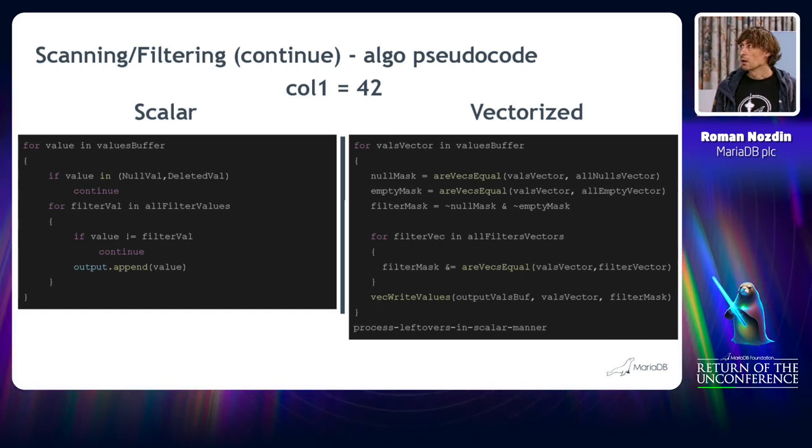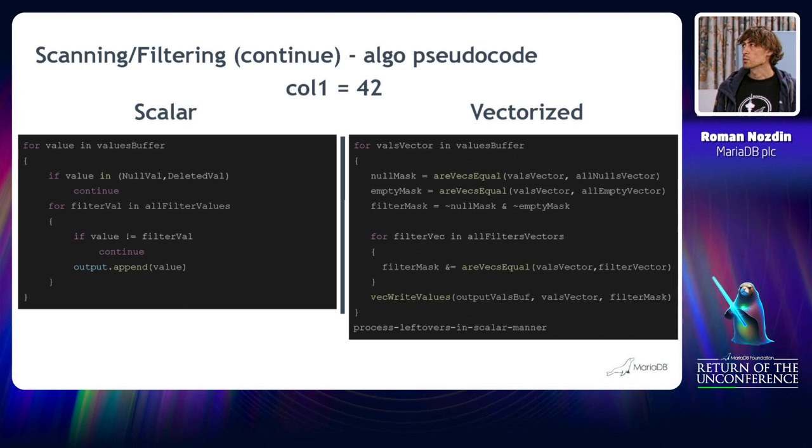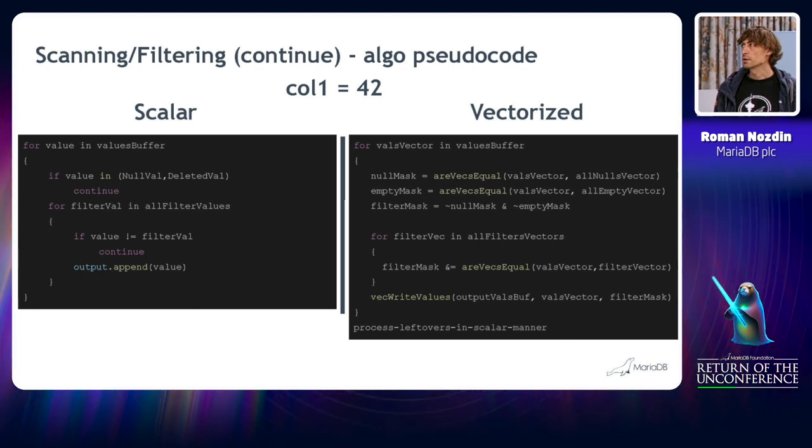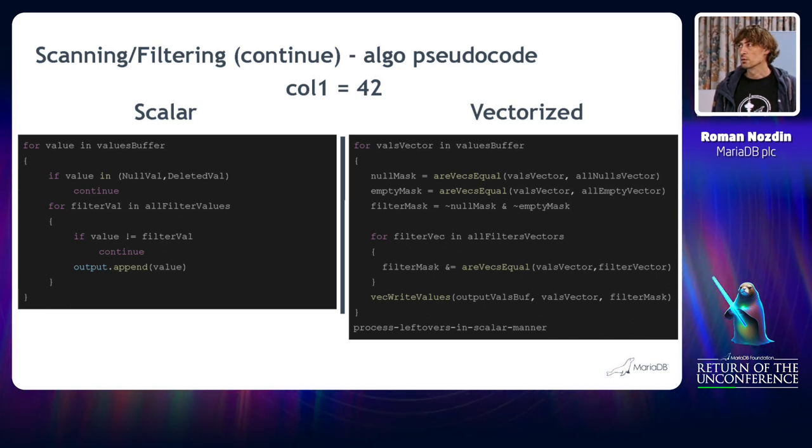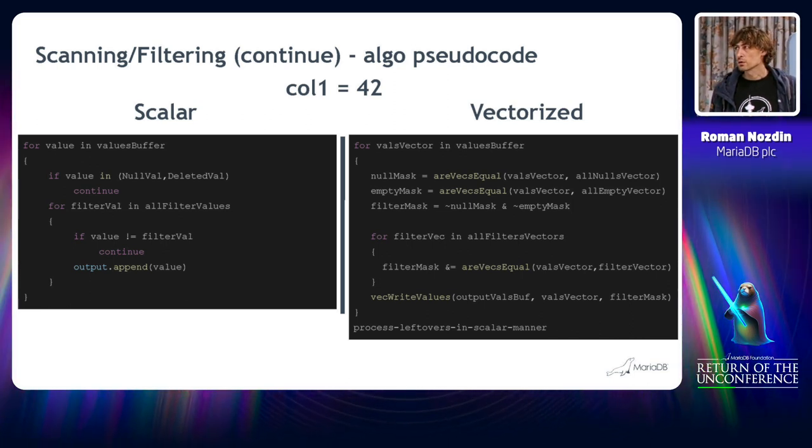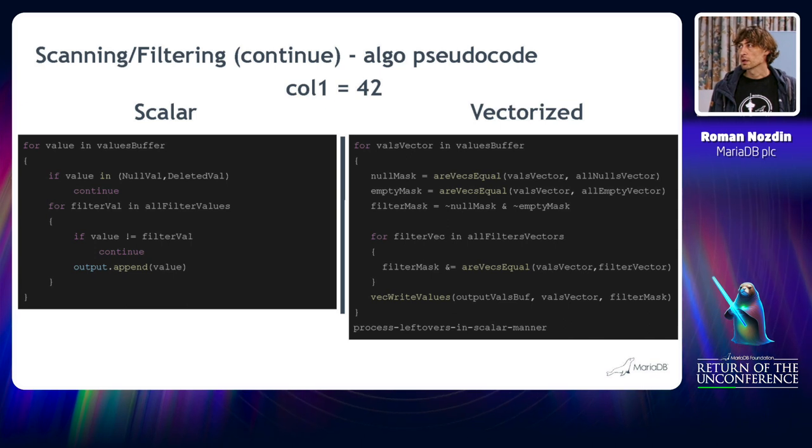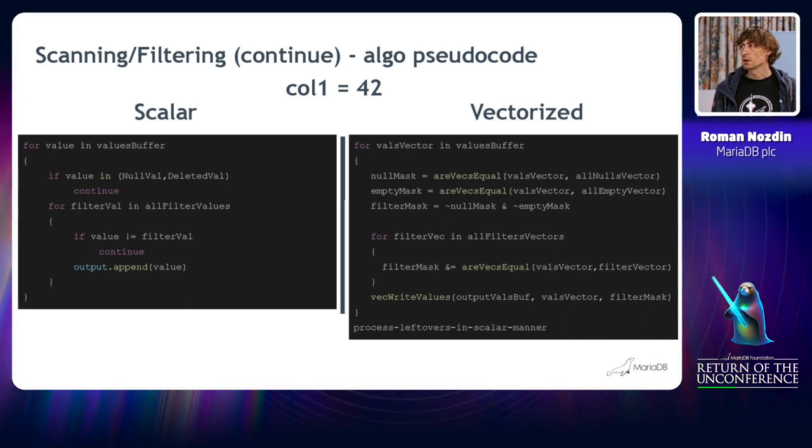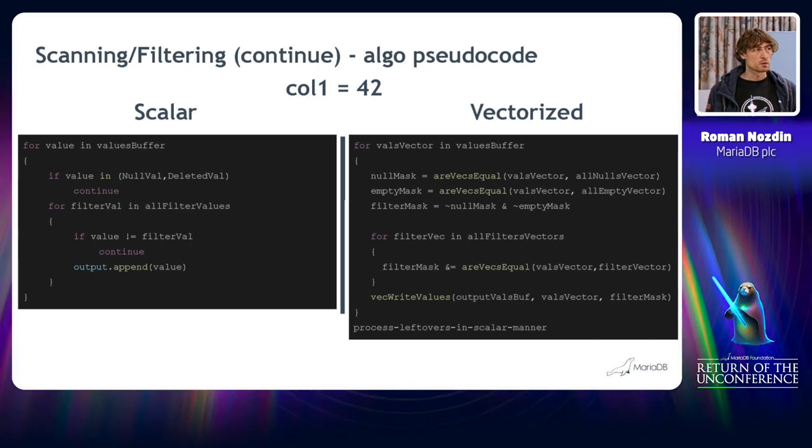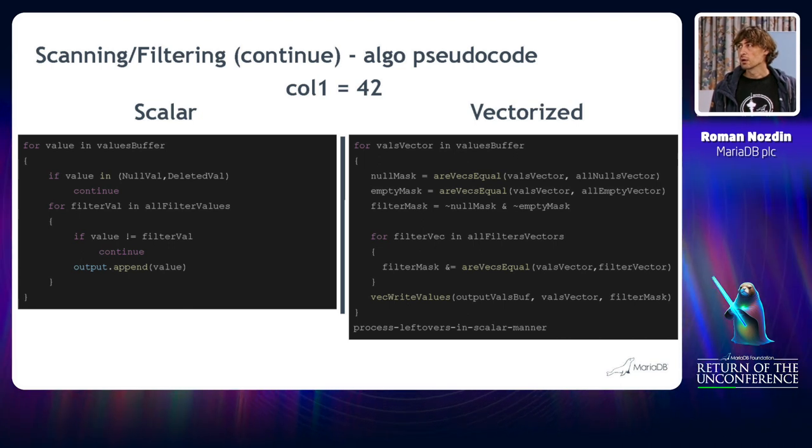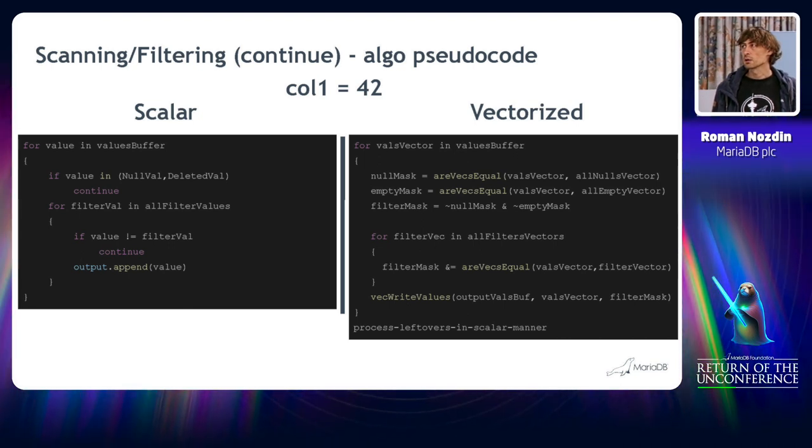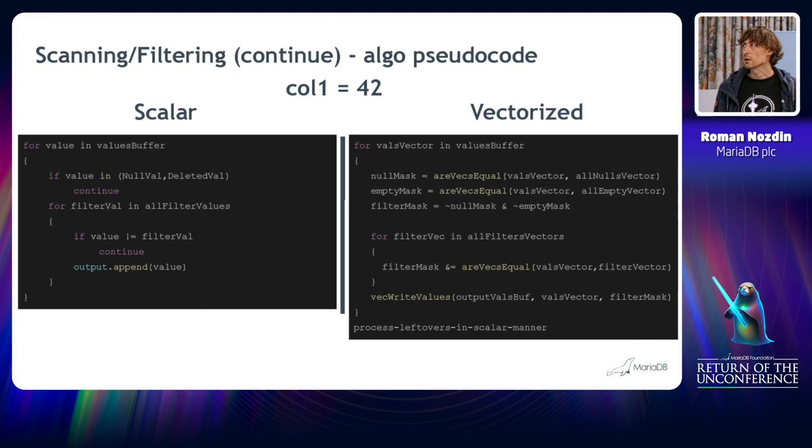At this snippet, you can see the pseudocode for scalar execution of this facility. And that's basically the core of the execution. Let's consider this example that we already see. We just try to pick up all the column values that equal to 42. And in a scalar world, what we do? We iterate over values that are in the buffer. We compare whether they have a special meaning or not.